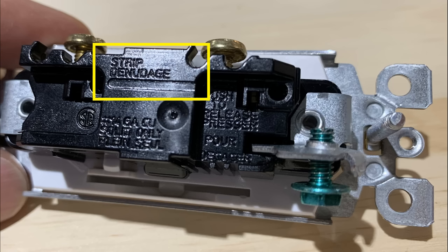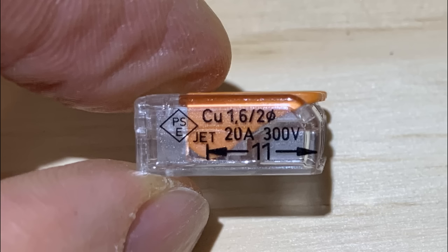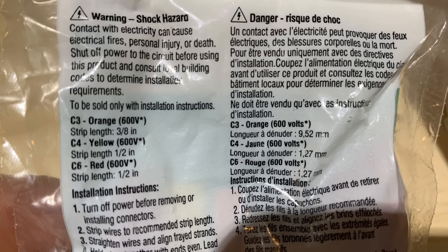Devices such as outlets or switches have markings on the back to show you how much insulation to strip. Connectors like WAGO connectors also show you how much insulation to strip. And if you're using a wire nut, the package will list how much insulation to strip from the wires.